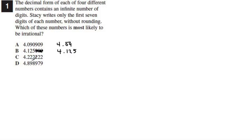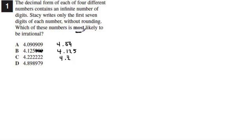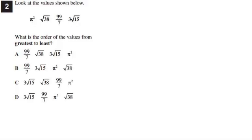We have C, which is 4.22222, so we know the 2 repeats — that makes it rational. That leaves us D, which is 4.898979. We don't know if that repeats. Our question said 'most likely irrational,' so letter D would be the answer.